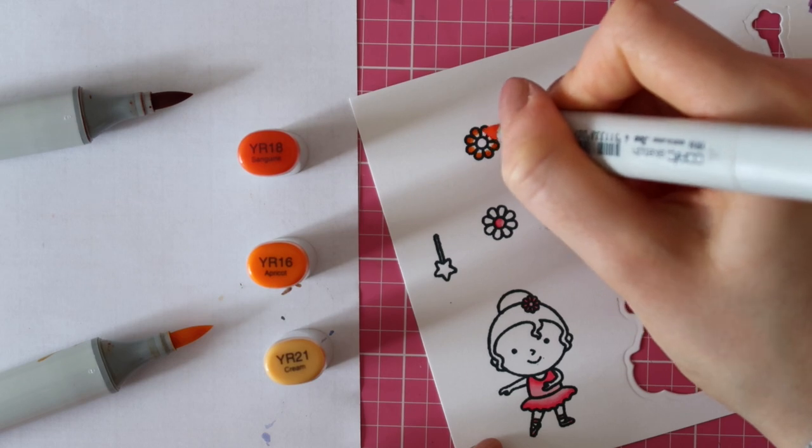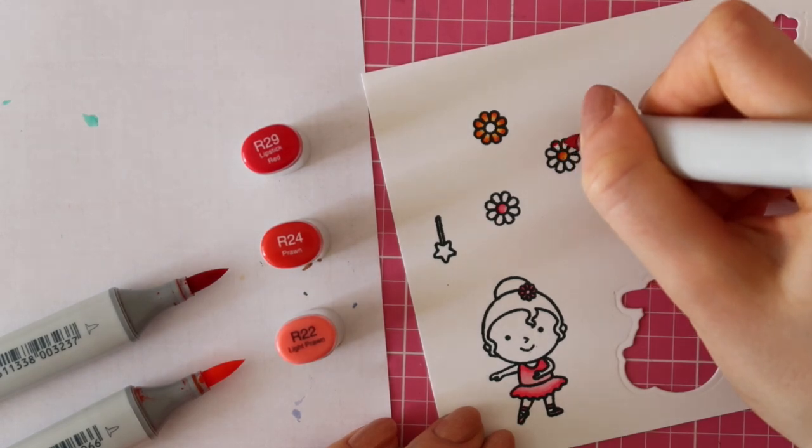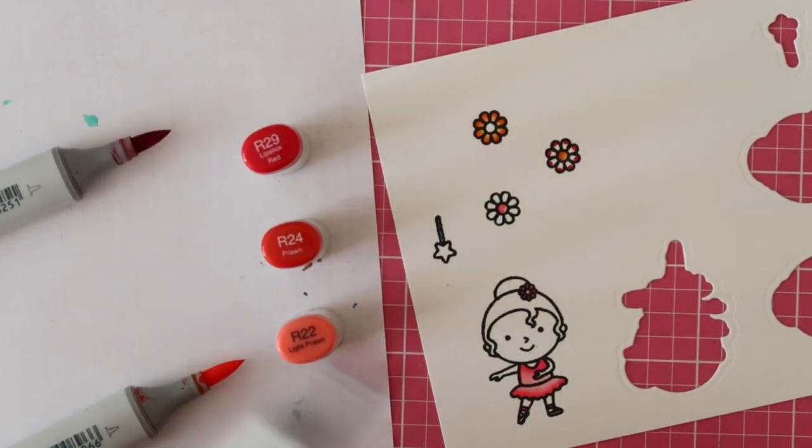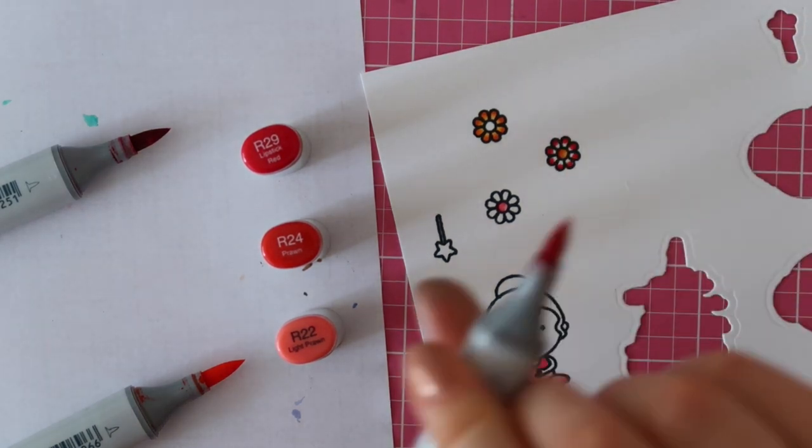For my first flower, I'm using some shades of orange. I'm using YR18, YR16 and YR21. Then for the red flower, I'm using R29, R24 and R22.